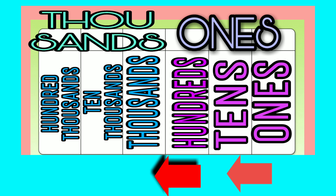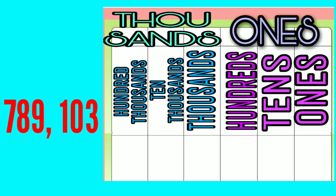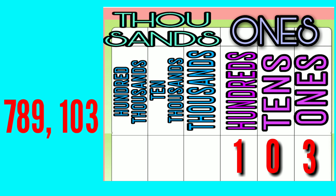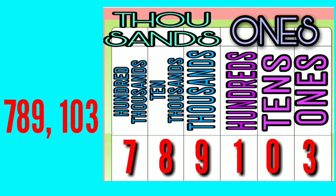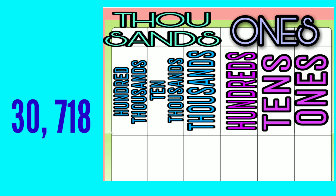Let's have an example: seven hundred eighty-nine thousand, one hundred three. We start from the rightmost digit, which is three — that is the ones place. Zero is the tens place. One is the hundreds place. Nine is the thousands place. Eight is the ten thousands place. And seven is the hundred thousands place.